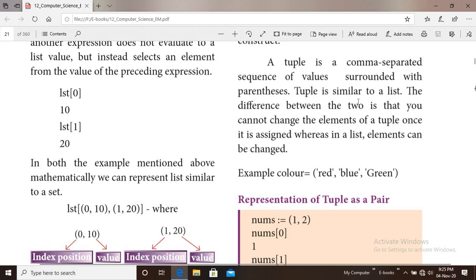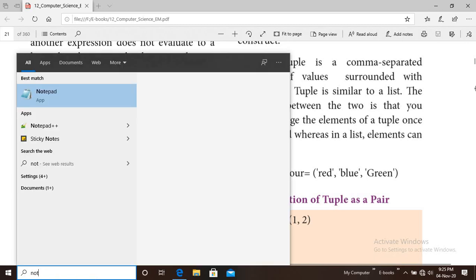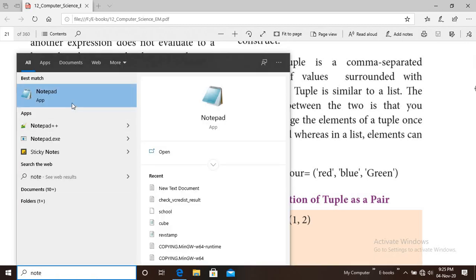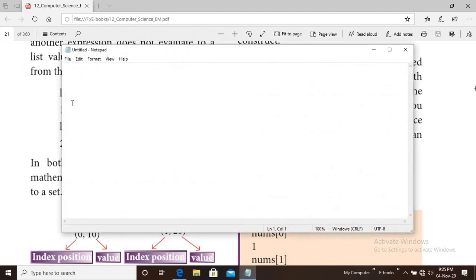The difference between the two is that you cannot change the elements of a tuple once it is assigned, whereas in a list elements can be changed. List elements are mutable. Tuple elements, you cannot change.